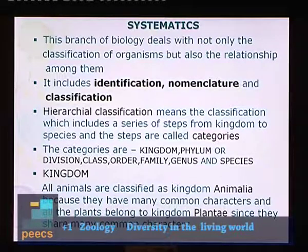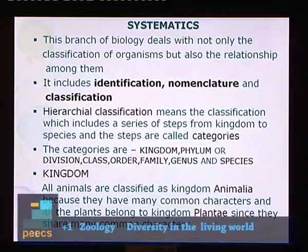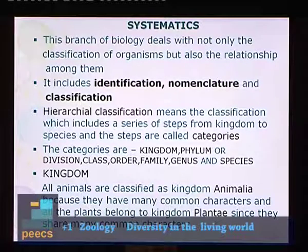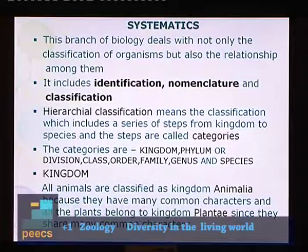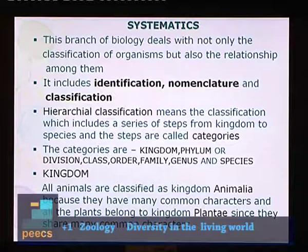Another important concept is hierarchical classification, which means the classification includes a series of steps from kingdom to species — and these steps are called categories. The categories are: kingdom, phylum (or division for plants), class, order, family, genus, and species. This is the hierarchical classification.